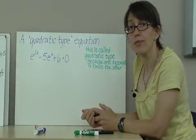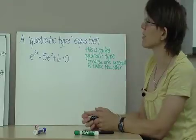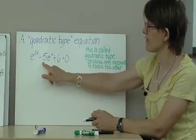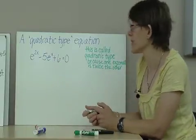Now, we have one of the more challenging types of equations. This equation is called quadratic type. e to the 2x power minus 5e to the x plus 6 equals 0.